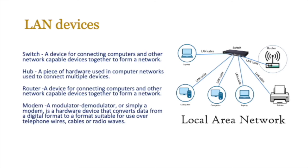Then you have devices like the router, which allows you to connect different networks together, and obviously there is the modem — a modulator and demodulator. A router is a device for connecting computers and other network-capable devices together; it allows you to form a network and also connect to other networks. A modem is simply a hardware device that converts data from a digital format to a format suitable for use over a telephone wire.